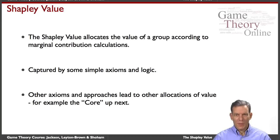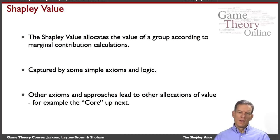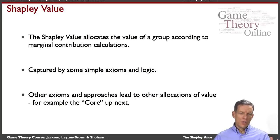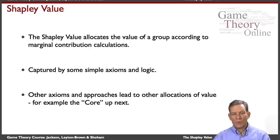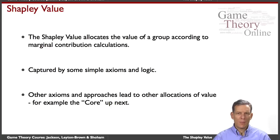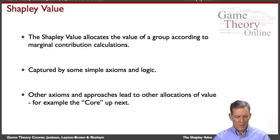So the Shapley value allocates the value of a group according to marginal calculations, and it's captured by some very simple and logical axioms. You can think of other axioms — other fairness ideas or other properties you want your rule to satisfy — and those will generate different kinds of predictions. Next we'll take a look at the core, which uses a different kind of logic than the Shapley value for making predictions about how a society should divide up its values.